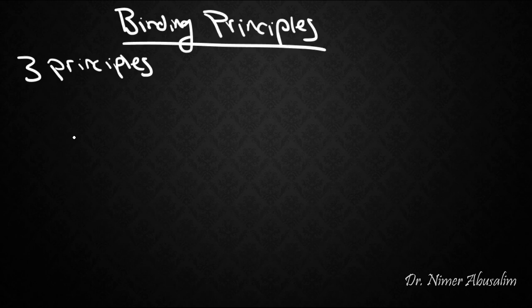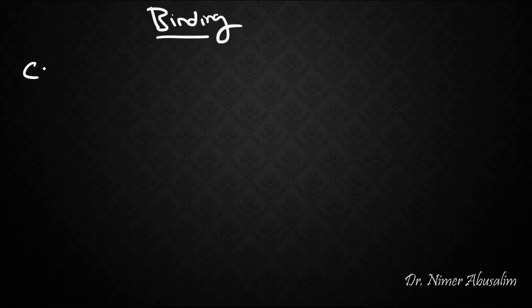There are three principles that govern how these three types of NPs—r-expressions, pronouns, and anaphors—can have their distribution within a sentence. But first we need to find out what binding is.